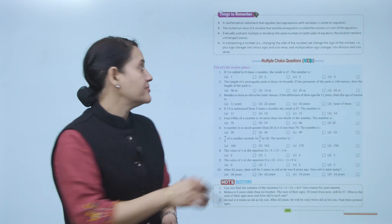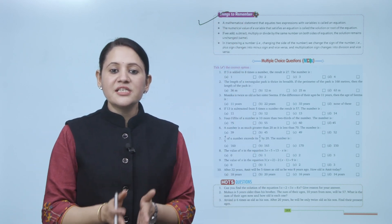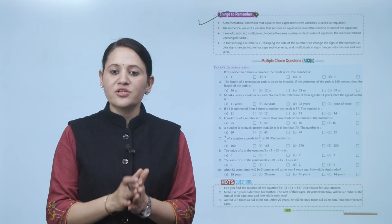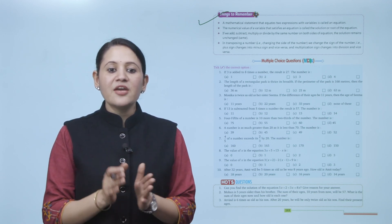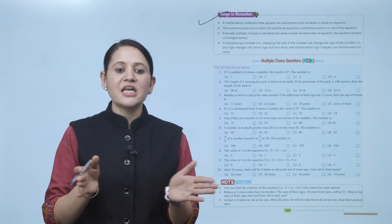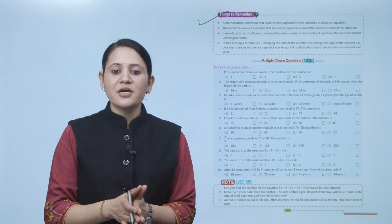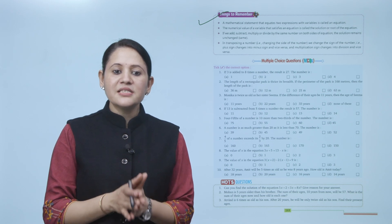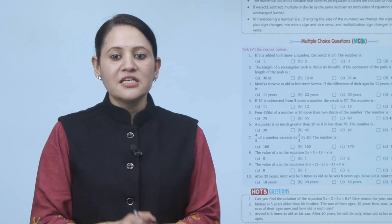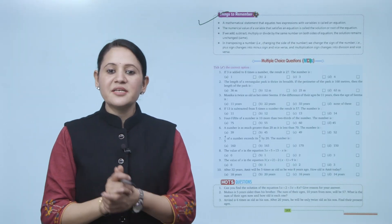Things to remember: a mathematical statement that equates an expression with a variable is called an equation. The numerical value of the variable that satisfies the equation is called the solution or root. Adding, subtracting, multiplying, or dividing by the same number on both sides of an equation leaves the solution unchanged. In transposition, when a number changes sides, its sign changes: plus becomes minus and vice versa, and multiplication becomes division and vice versa.